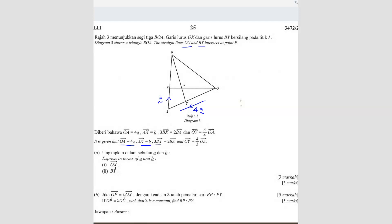3BX equals to 2BA. So actually you can form the ratio. 3BX over BA equals to 2 and 3. BX is here, and BA is the whole thing. So the whole thing ratio is 3, and BX ratio is 2. That means here ratio is 1.